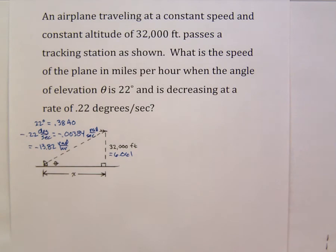Now we have attended to the issues of units and it's appropriate to proceed to actually solving the problem. We're asked about this distance x and its rate of change. We're given information about theta and its rate of change. We have to relate them somehow.